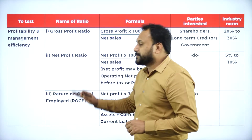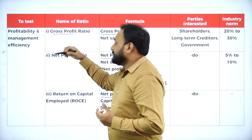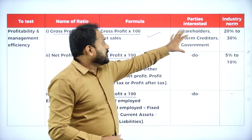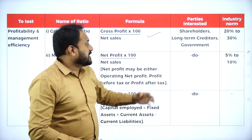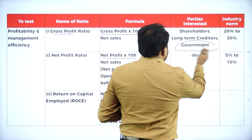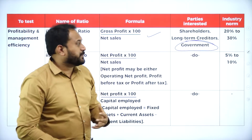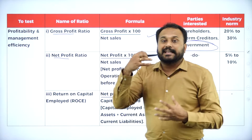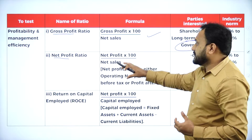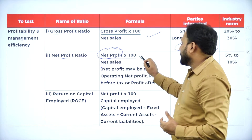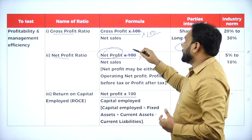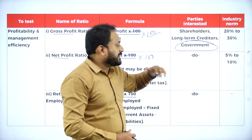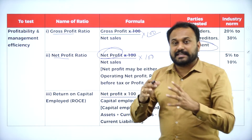The first one is the gross profit ratio — gross profit divided by net sales into 100. The parties interested are shareholders, long-term creditors, and the government. The industry norm is 20% to 30%. The next one is net profit ratio — net profit divided by net sales into 100. The parties interested are shareholders, long-term creditors, and the government, and 5% to 10% is considered good.